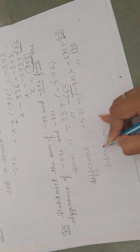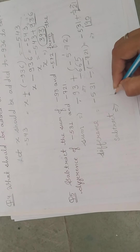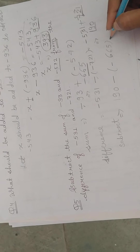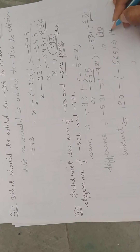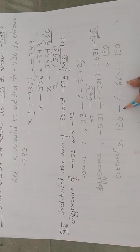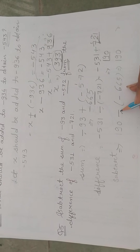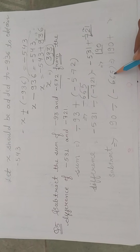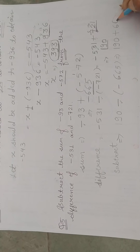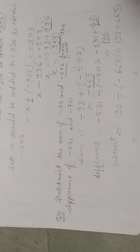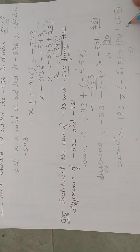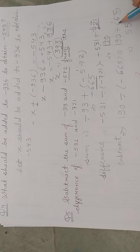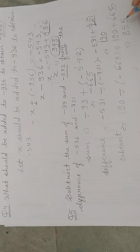We will take 190 and subtract minus 665 from it. 190 minus (minus 665) — when we open the bracket the sign changes, minus becomes plus, so it becomes 190 plus 665. Now we perform addition: 0 plus 5 is 5; 9 plus 6 is 15 — write 5, carry 1; 6 plus 1 is 7; 7 plus 1 is 8. So the final answer is 855.